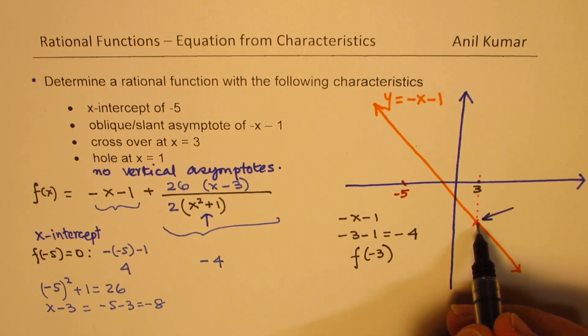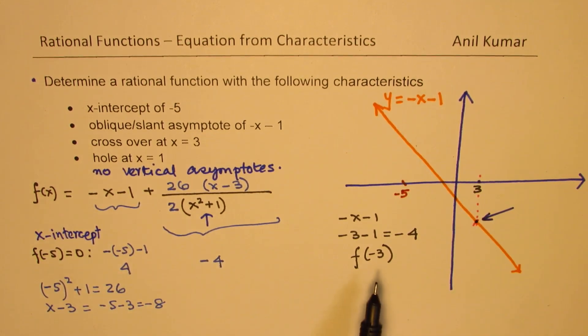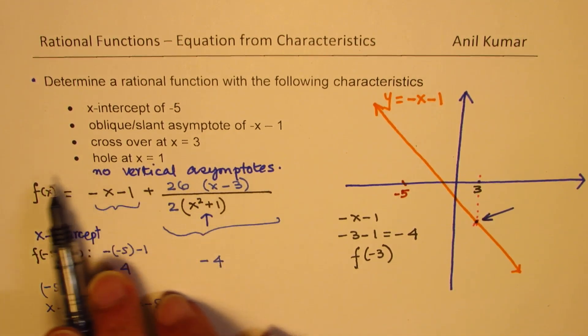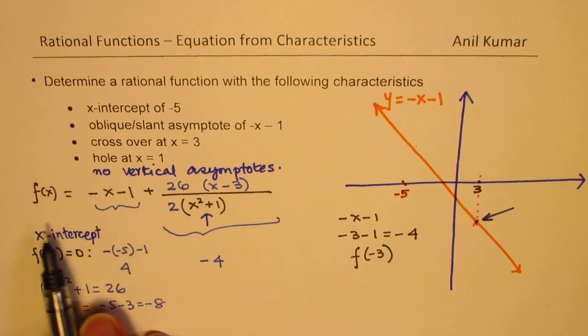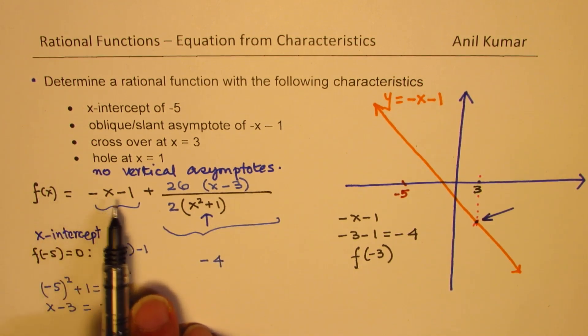So if it has a value of minus 4, it is going to cross at this point. So now, if this is my function, let us substitute the value of 3 and calculate.